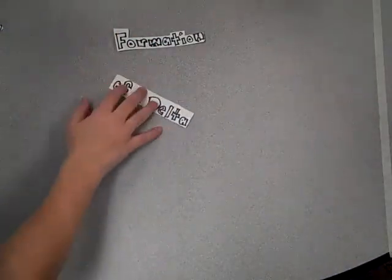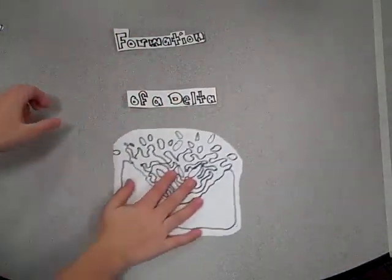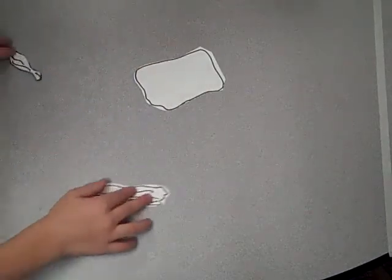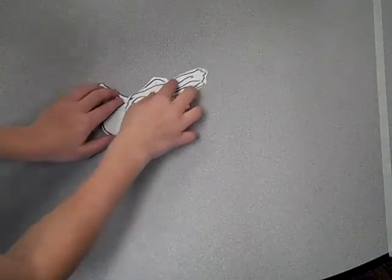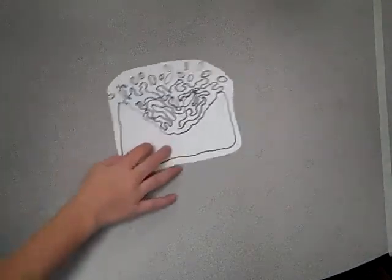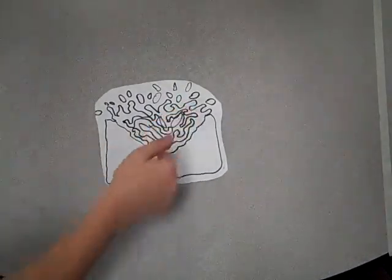Formation of a delta. A delta is formed when two bodies of water wash sediment from both sides of the water down. Over a period of time, the land starts to get lower. For example, the Grand Canyon.